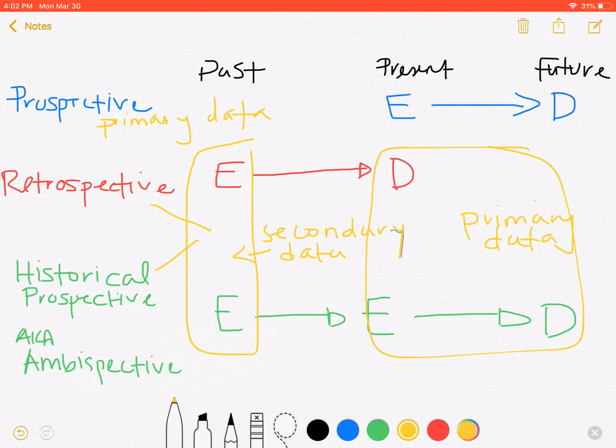So those are our three study designs. Prospective study designs, where we follow you into the future. Retrospective, where we go into your past, look at what you were exposed to, see whether or not you have the disease today. And then historical perspective, which combines the prospective and the retrospective by looking into the past for exposures, collecting exposures now, and then following you through to see if you get the disease in the future.